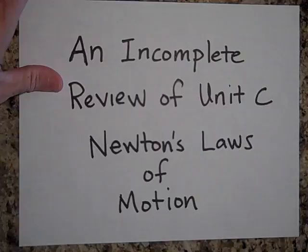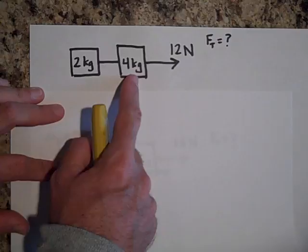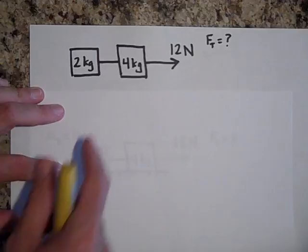Here we go with an incomplete review of Unit C, Newton's Laws of Motion. You want to stop and pause every once in a while to see if you can get the answers. We have a 2-kilogram and 4-kilogram block on a frictionless surface — no friction here. We pull with 12 newtons. What will be the force of tension? Go ahead and pause.